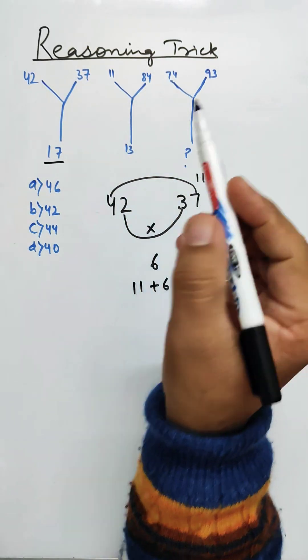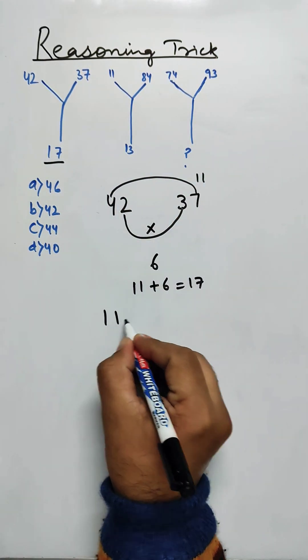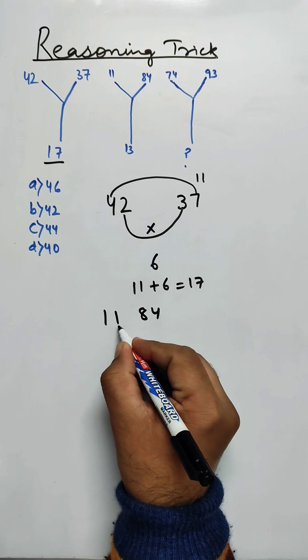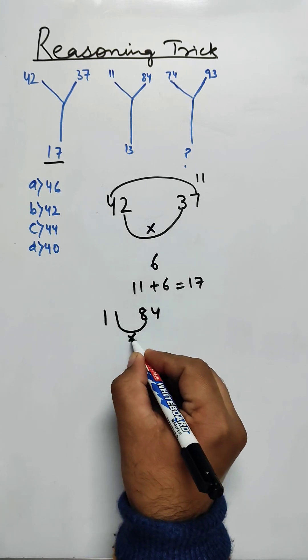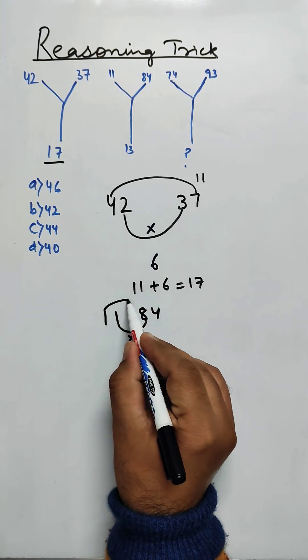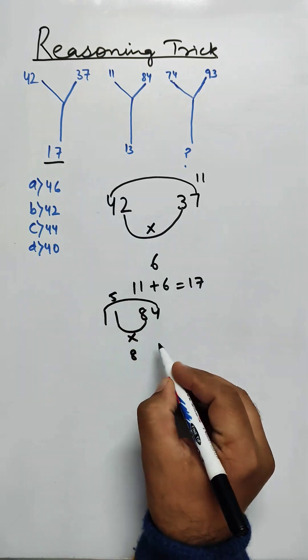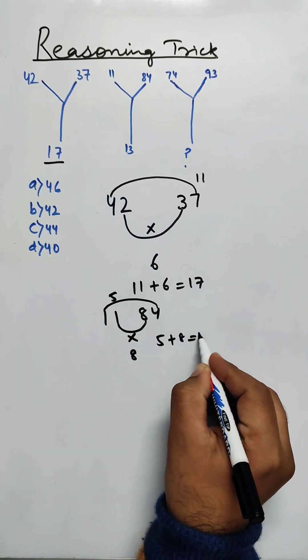Similarly with 11 and 84, we can check with 11 and 84. If we multiply the inner term, we get 8. And if we add the outer term, we get 5. So 5 plus 8 is 13.